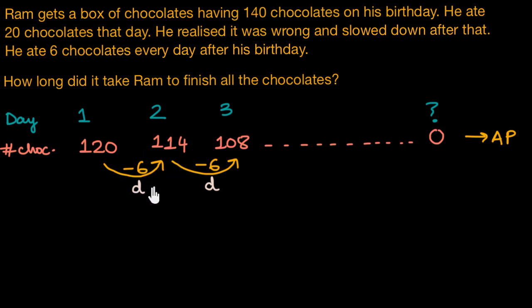Now you can also observe that to get to our second term, we are adding this common difference once to the first term. Similarly, to get to the third term, we are adding this common difference twice to the first term. And if we add the common difference thrice to the first term, we will get our fourth term here.